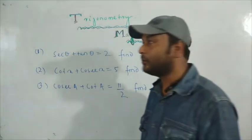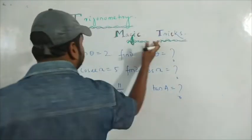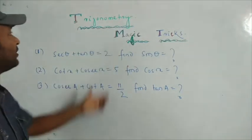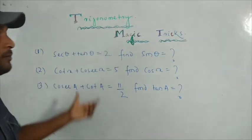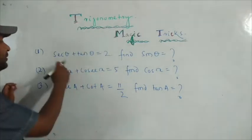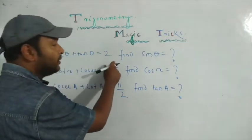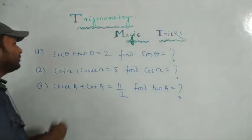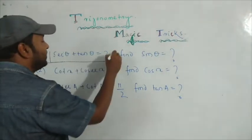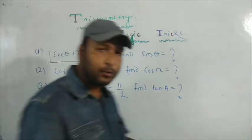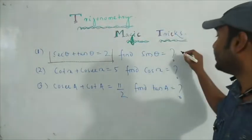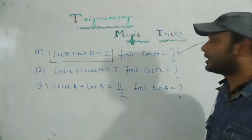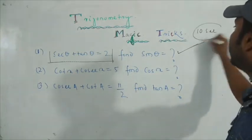Today we will discuss trigonometric magic tricks. You have already thought about trigonometry — what are the magic tricks? Can you solve: sin θ + tan θ = x? If sin θ + tan θ equals some value, what is the value of sin θ? You can solve this, but I can solve this in just 10 seconds. In just 10 seconds you can solve all three problems.